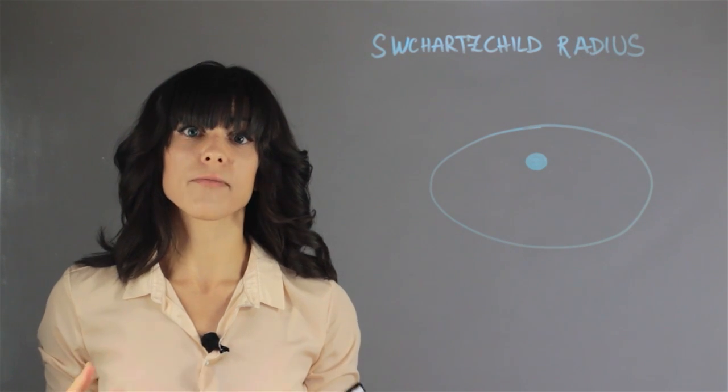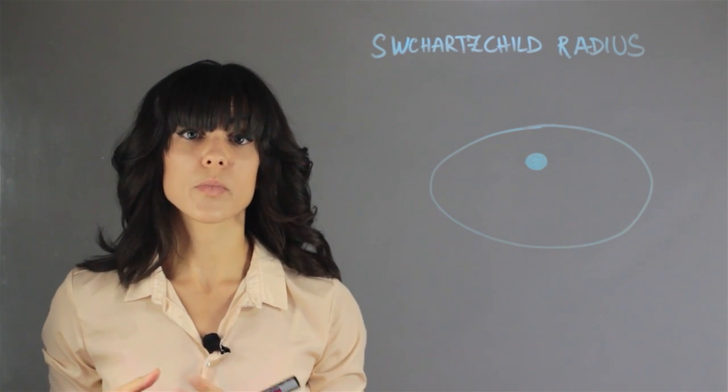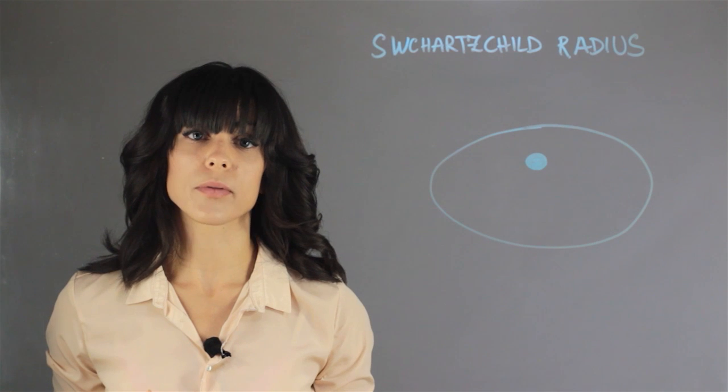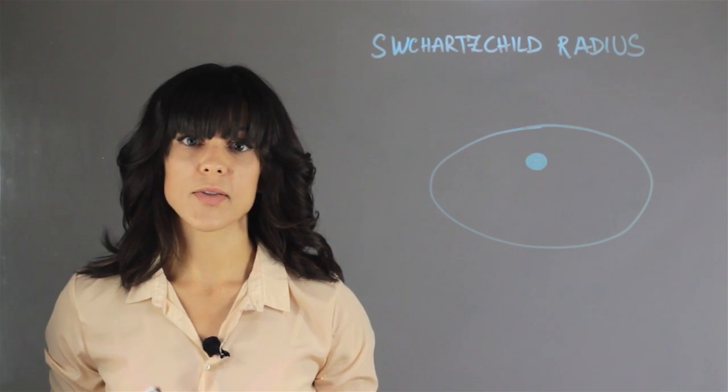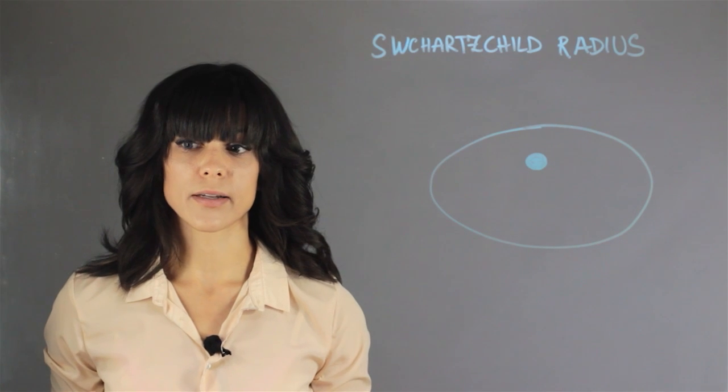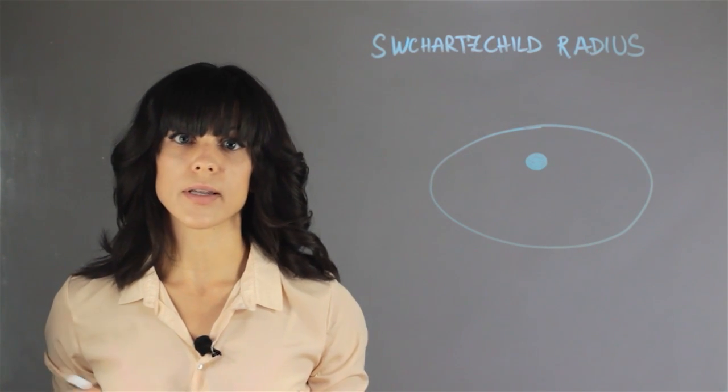But think about this: we have black holes in the universe, so at some point, at some distance away from the black hole, you can escape the black hole. So let's talk about the different parts of the black hole and kind of define what goes in and what can escape.